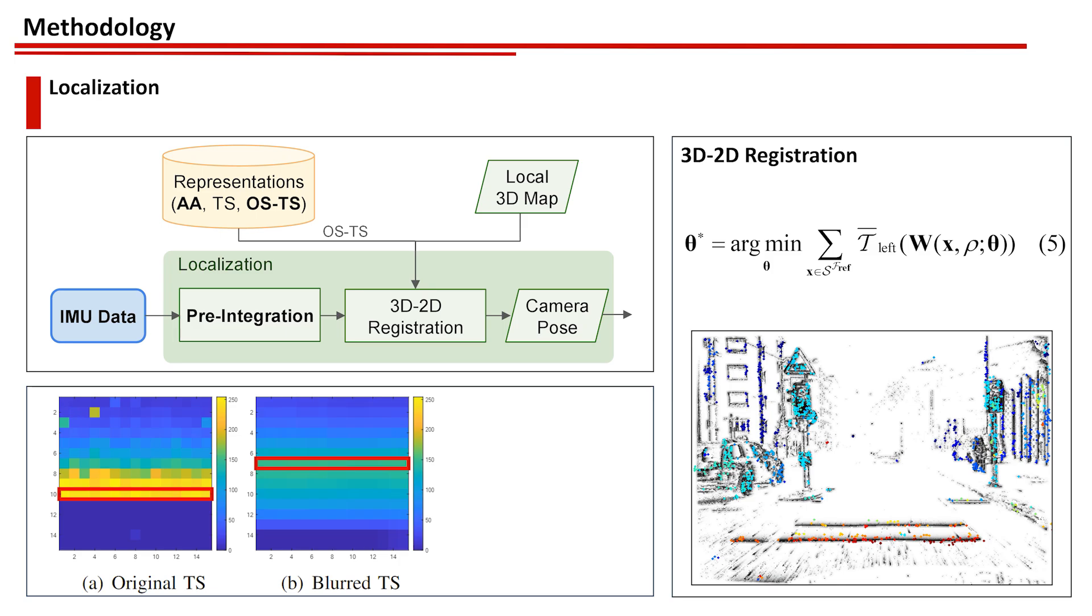However, this results in a notable offset in the location of the edges. To address this, we propose an offset-free time surface by concatenating the time surfaces before and after blurring, ensuring that gradients are present on both sides of the edge without offset.